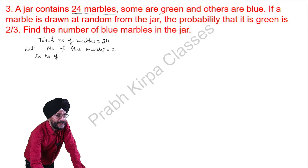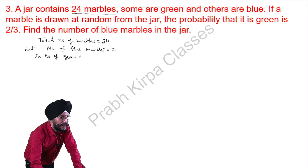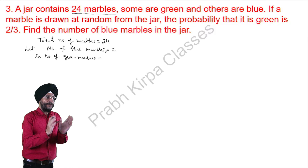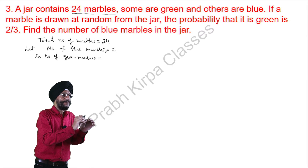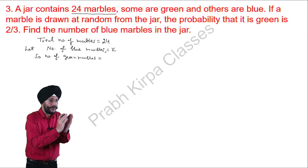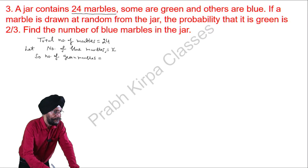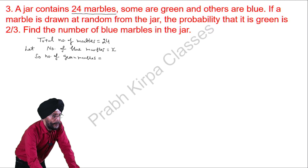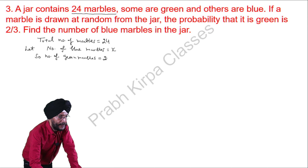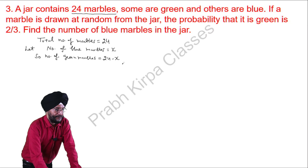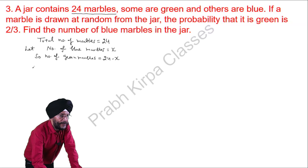The other marbles are green. Since all marbles are either green or blue and the total is 24, with blue marbles assumed to be x, we can say the number of green marbles is 24 minus x. Now we can find the probability of green marbles.